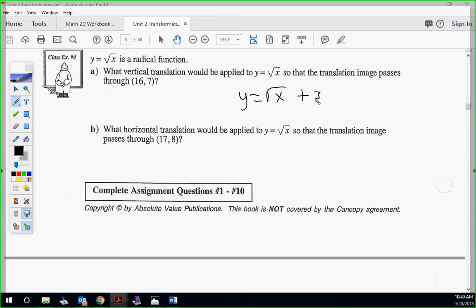Yeah, what just happened? Magic. No. 16 is what we have for an x, right? When that 16 is plugged in, we need to get a 7. So, if I plug 16 into here, square root of 16 is 4. That's not 7, so we need to add 3 to the 4 to get our 7. Does that make sense? Okay, go ahead and try the second one, then. Try the second one. What horizontal translation needs to be applied to root x so the translation image passes through (17, 8)? I'll give you a second to think about it here and pause it.